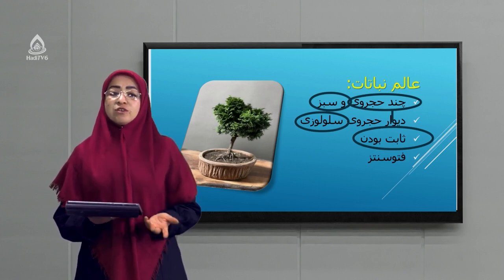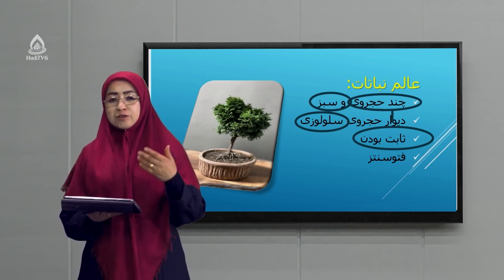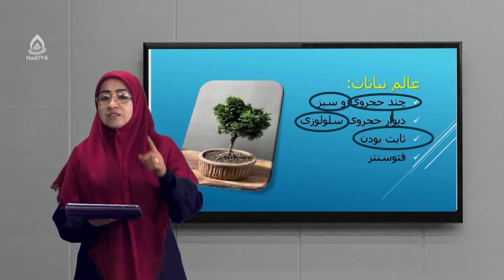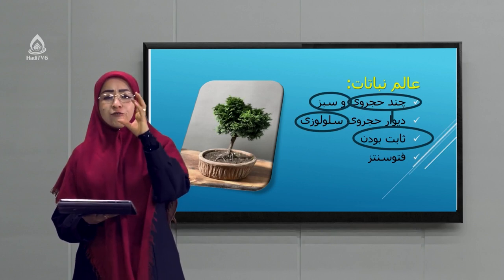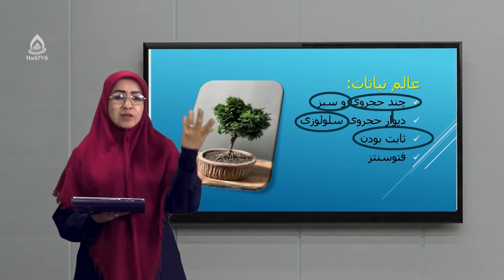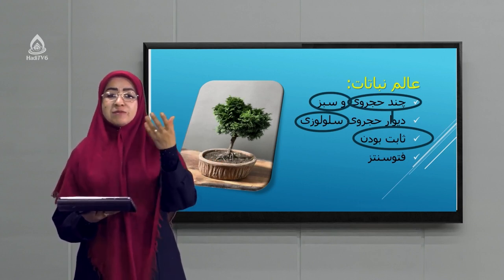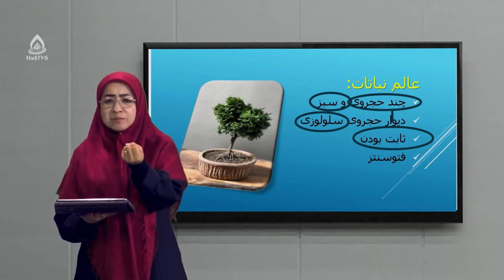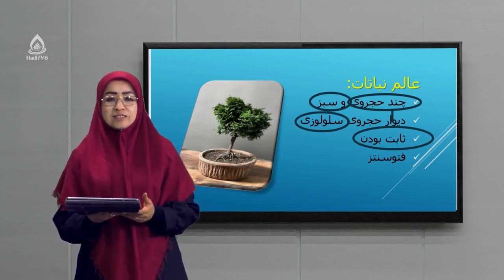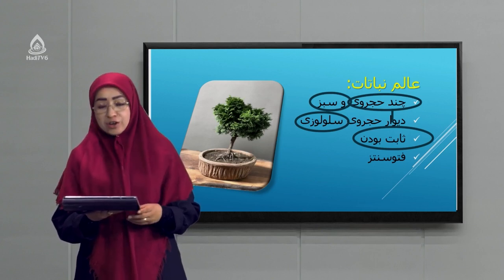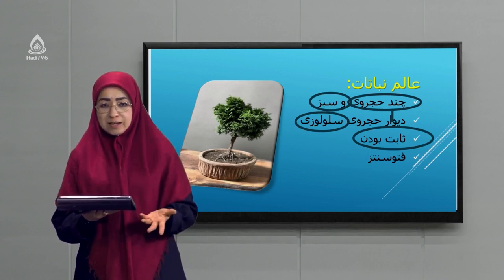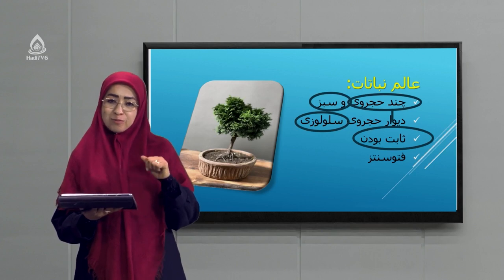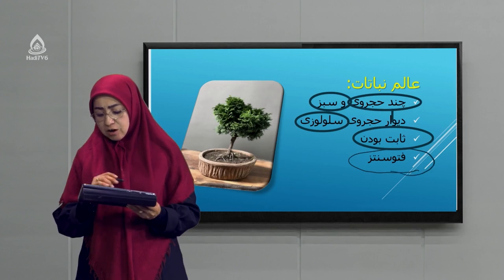نباتات حرکت نمیکنند — اینطور نیست که یک روز درخت پیش در اولی رفته باشد پیش در همسایه. یکی از شما پرسید پس آفتابگردان چی؟ که صبح به یک طرف و بعدازظهر به طرف دیگر است؟ یا بعضی نباتاتی که برگشان وقتی حشره روی آن قرار میگیرد سریع جمع میشود؟ این‌ها حرکت‌های جزئی گیاه هستند که تحت تأثیر محیط صورت میگیرند. این‌ها را در سنف یازده در کتاب بیولوجی مفصل میخوانید، اما ویژگی اصلی حجره نباتی حرکت نیست.